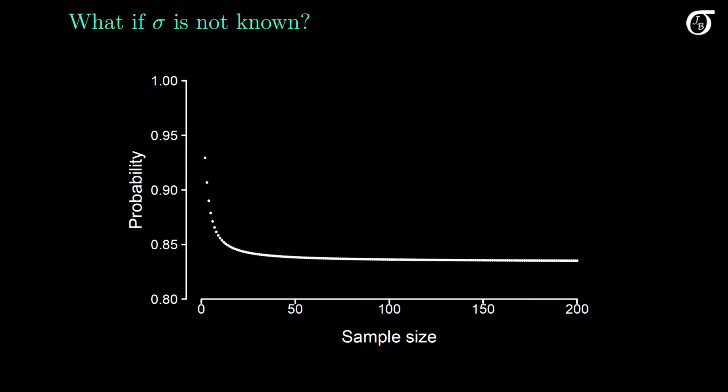This plot illustrates the probability if we use the t procedure. For small sample sizes, the probability is quite a bit bigger than the 0.835 that we calculated above, but it quickly approaches it as the sample size increases. Here I'll put in a green line to represent the value of 0.835 that we found above. For reasonably large sample sizes, the probability is very close to 0.835.